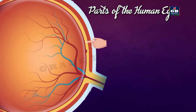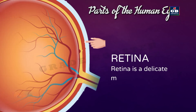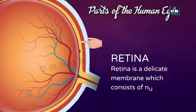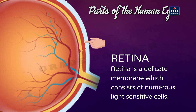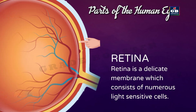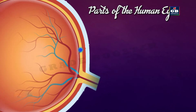Retina is a delicate membrane which consists of numerous light-sensitive cells. It acts like a screen — the light that enters our eye gets cast on this screen-like structure called the retina. The cells in the retina get activated when light falls on them, and these light signals are converted to electrical signals; the retina converts light into electrical signals.